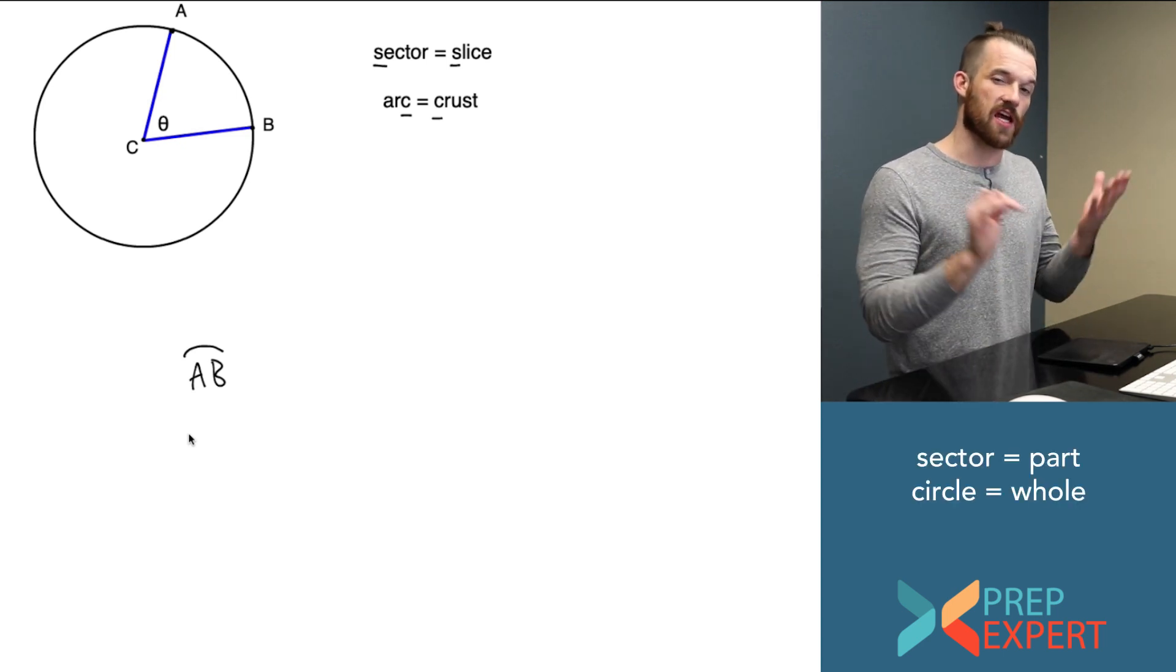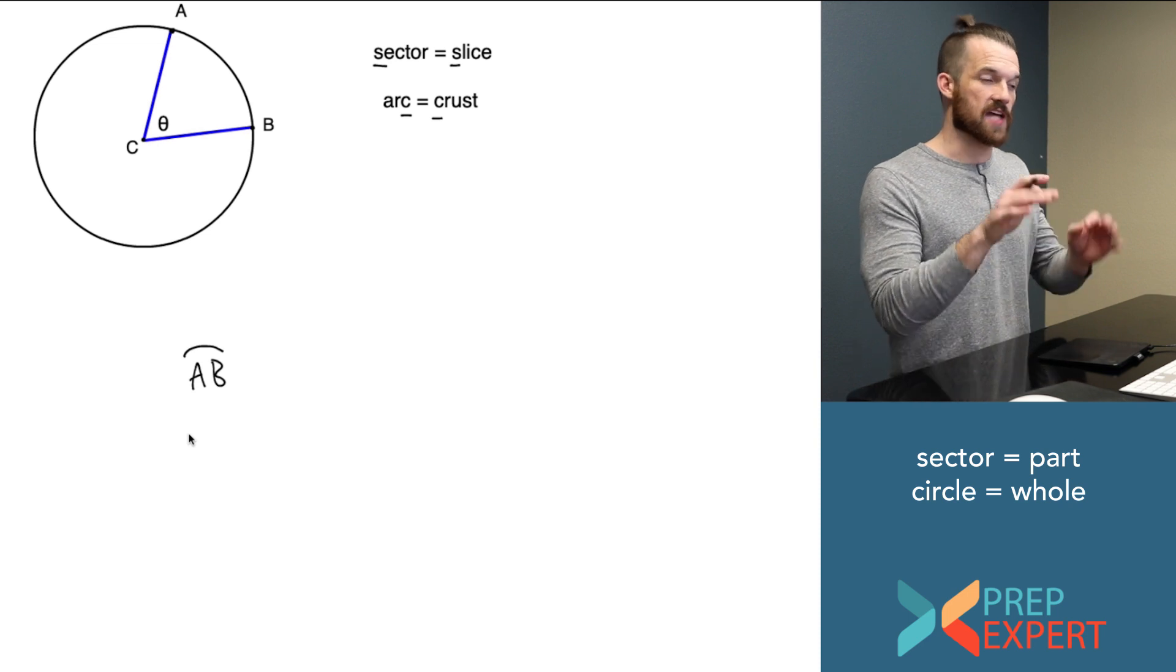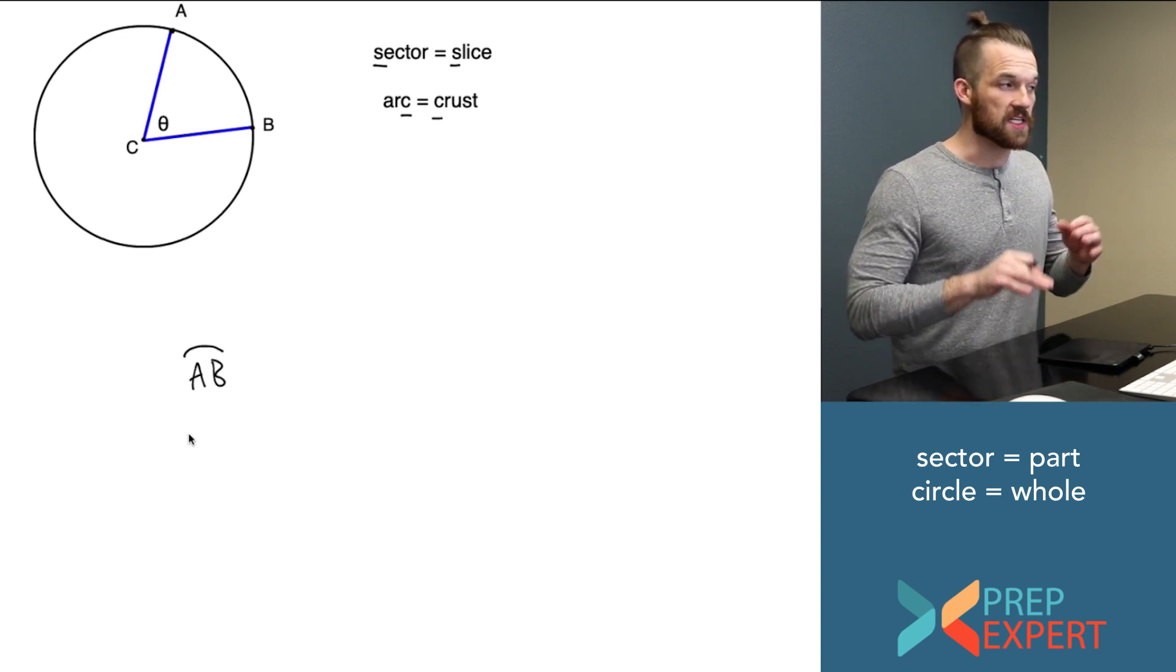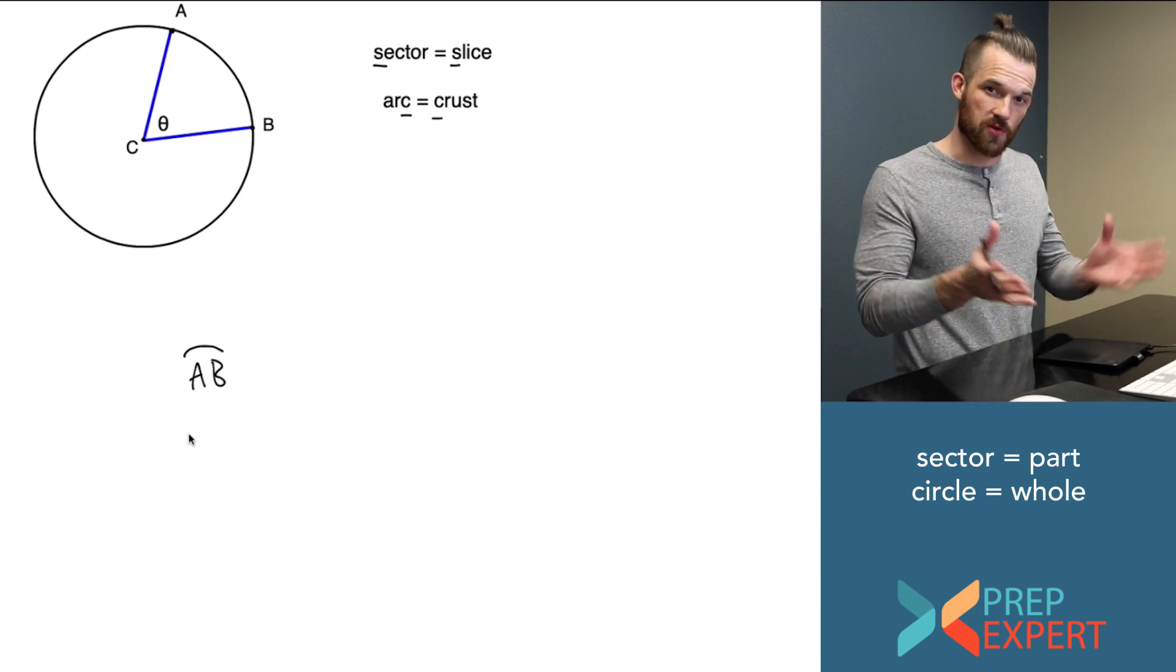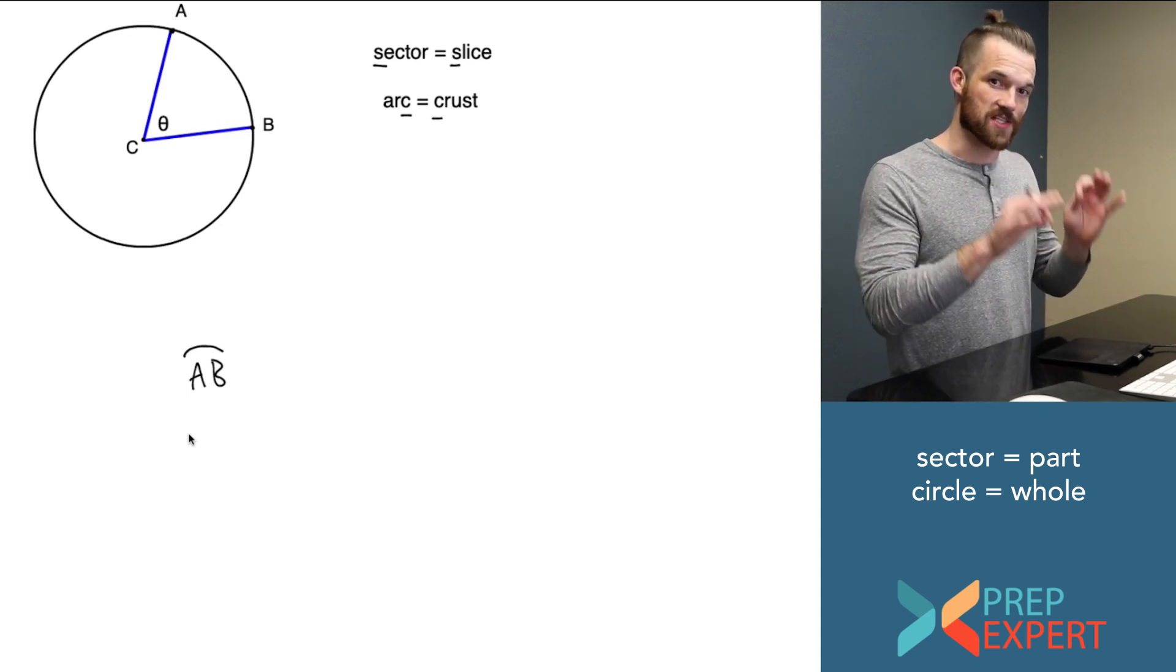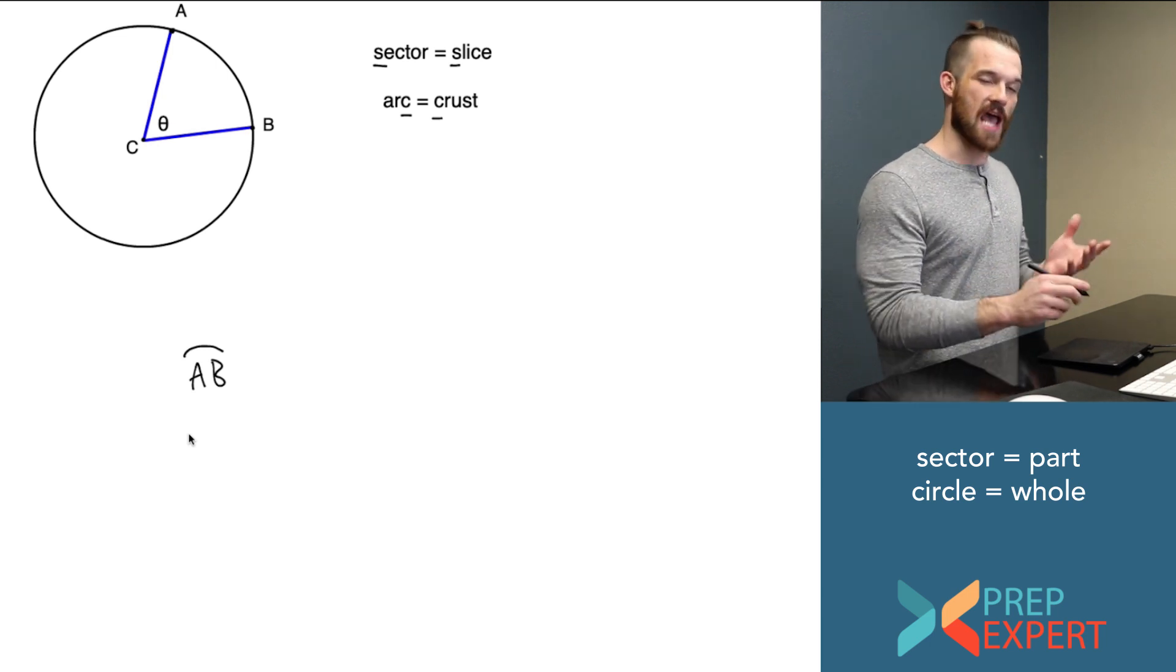Every attribute, every characteristic of the sector has a corresponding characteristic of the circle as a whole. The easy way to figure out which characteristic of the circle as a whole a characteristic of the sector corresponds to is to ask yourself, if I expanded the sector until it encompassed the whole circle, what would this characteristic become?